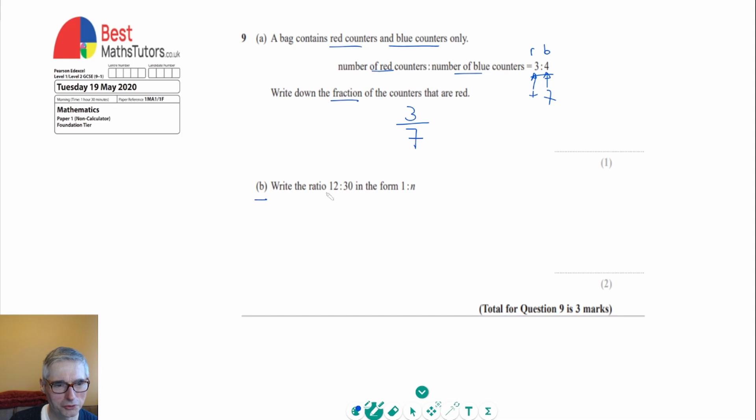In part b, we've got a ratio here, 12 to 30, and we've got to write it in the form 1 to n. In other words, we've got to make the first number equal 1. So if I take our ratio here again, 12 to 30, I can always change the ratio providing I do the same thing to both numbers.